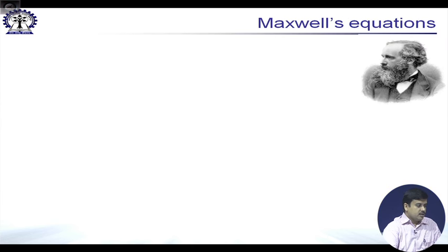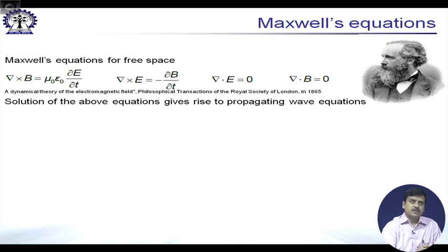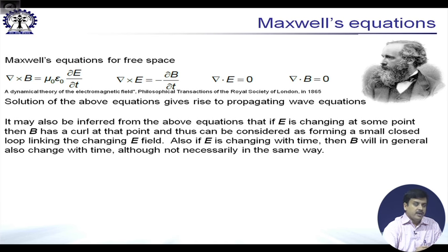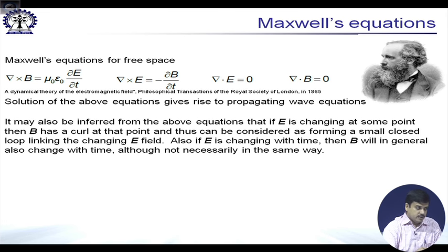When Maxwell developed his set of equations, first published around 1865, we can see that if the E field — the electric field — is changing at some point, the magnetic field has a circulation. It can also be considered as forming a closed loop linking the electric field. It is also true that if the E field changes with time, then the magnetic field will also change with time, although not necessarily in the same way.